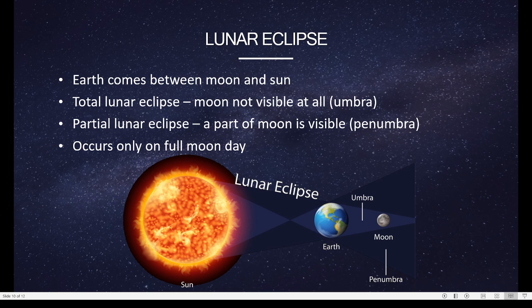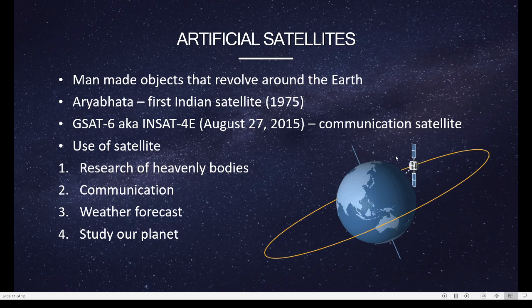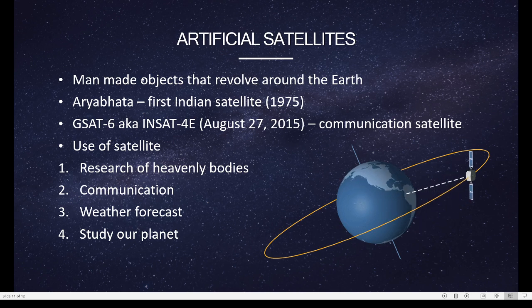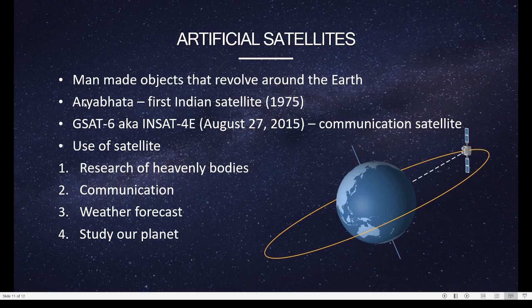Now that we have learnt about our natural satellite, the Moon, and the eclipses, let's learn about artificial satellites. This is what an artificial satellite looks like. Something like this. Not all of them will look the same. What are artificial satellites? They are man-made objects that revolve around the Earth. The first Indian satellite was Aryabhatta which was launched in 1975.